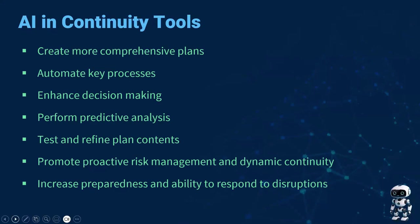A newer evolution in AI is its integration into some of the continuity tools available on the market. These continuity tools promote AI as being able to create more comprehensive plans, automate key processes, enhance decision making, perform predictive analysis right within the tool, and test and refine plan contents. When AI is integrated into the tool itself and can evaluate all of your data housed there, it becomes really powerful. This promotes proactive risk management and dynamic continuity, and of course increases your preparedness and ability to respond to disruptions — which is the goal at the end of the day.